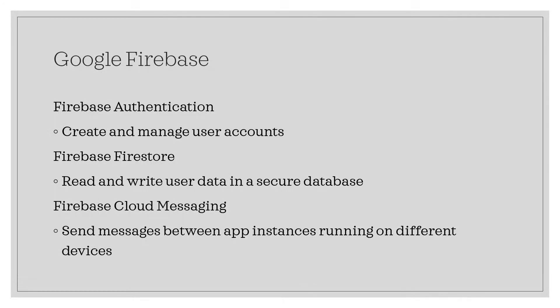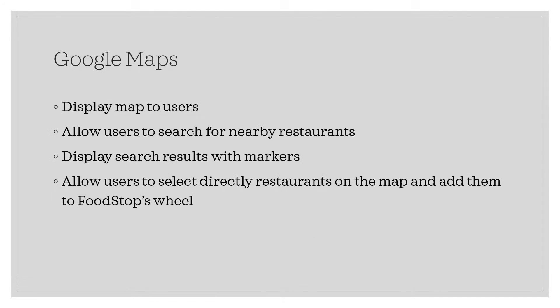Google Firebase powers our app's entire backend. With Google Firebase, we can create and manage user accounts for our app, store all our app's data in a secure database, and even send messages between instances of our app running on different devices. Google Maps allows us to show a map to our users directly inside our app. You can search for restaurants near your location and add them to Food Stop's wheel directly from there.